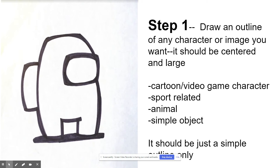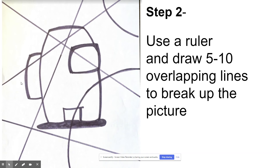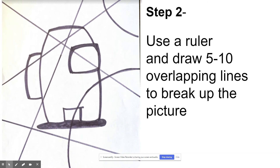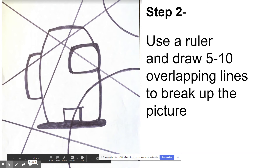Step one: decide on a simple character or object to draw. Step two: use a ruler to draw some straight or curved lines to divide up the design and the paper — between five and ten lines. In school we use 12 by 18 paper, but at home if you don't have that size, use regular computer paper or whatever you have. Even in the video he mentioned he didn't have paper growing up — he did it on newspaper or cardboard. So the back of a cereal box, whatever you've got, is fine.